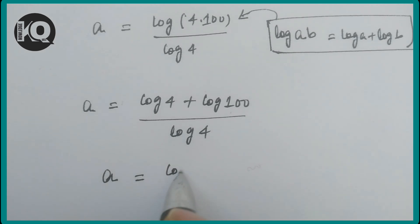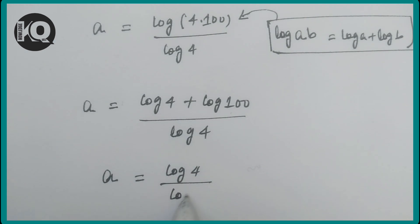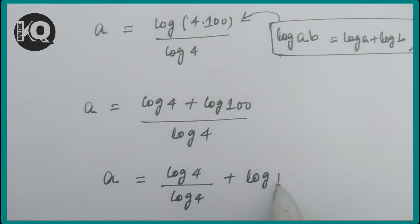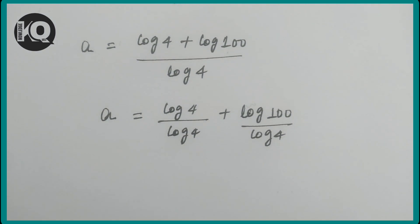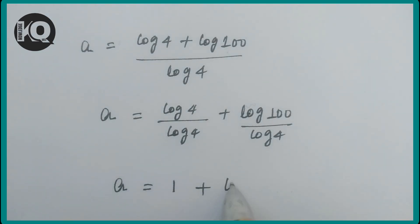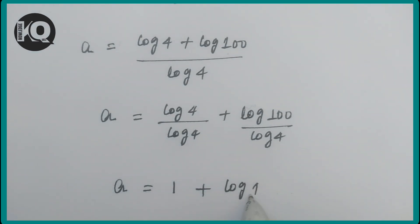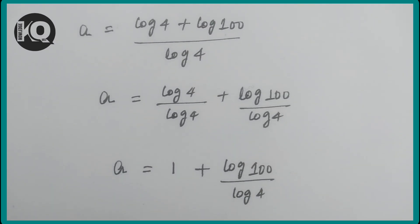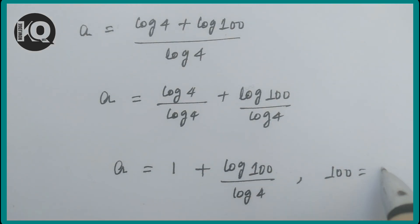Separating the terms: a = log(4)/log(4) + log(100)/log(4). Since log(4)/log(4) = 1, this simplifies to a = 1 + log(100)/log(4).